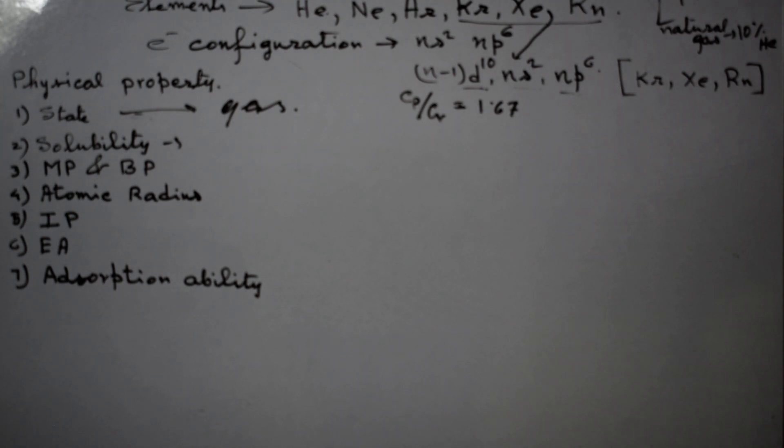Noble gases contain helium, neon, argon, krypton, xenon, and radon. Among these gases, an important point is that helium, neon, and argon have general electronic configuration ns2 np6. The s orbitals and p orbitals are totally filled.